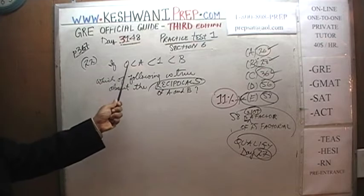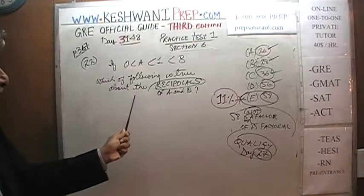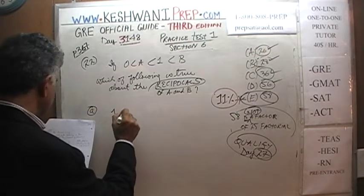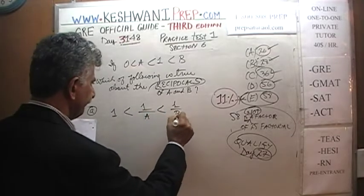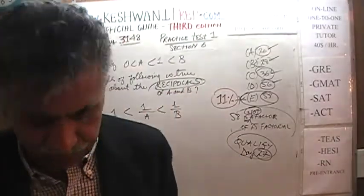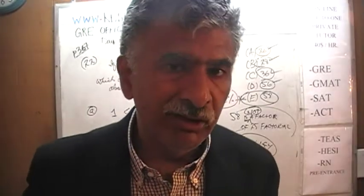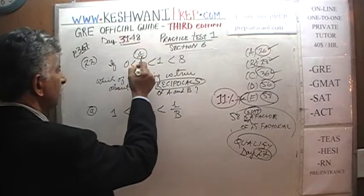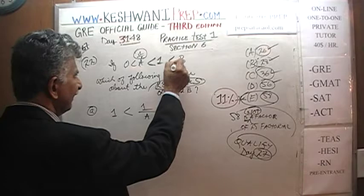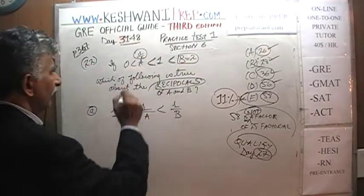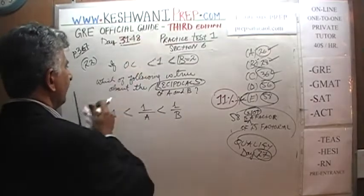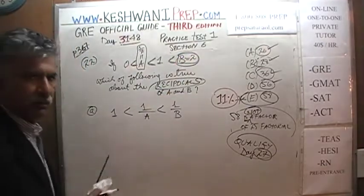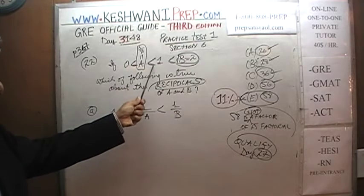The question is: if 0 < A < 1 < B, which of the following is true about the reciprocals of A and B? The simplest and most economical way is to plug in numbers. Let's plug in one half for A — because 0 is less than one half and one half is less than 1 — and let's plug in 2 for B, because 1 is less than 2. Those are legitimate values.